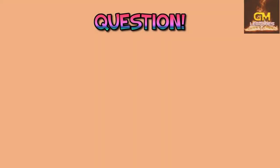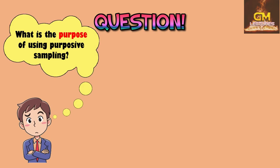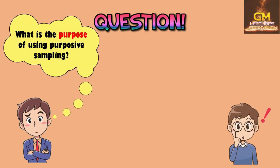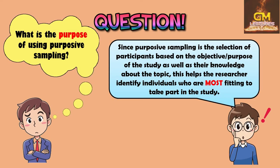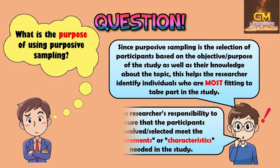Now let's answer another question: what is the purpose of using purposive sampling? Since purposive sampling involves the selection of participants based on the objective or purpose of the study as well as their knowledge about the topic, this helps the researcher to identify the individuals who are most fitting to take part in the study. However, it is also the researcher's responsibility to ensure that the participants selected meet the actual requirements or characteristics which are needed in the study.